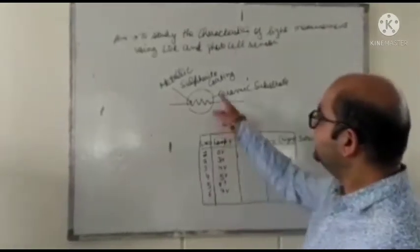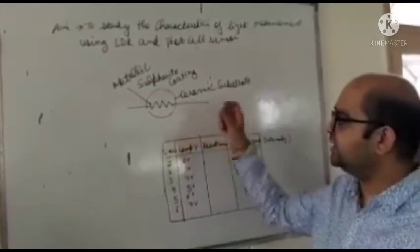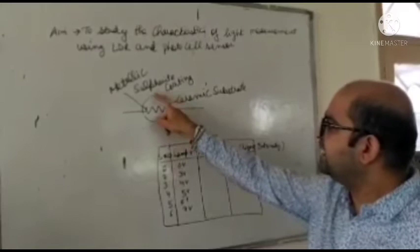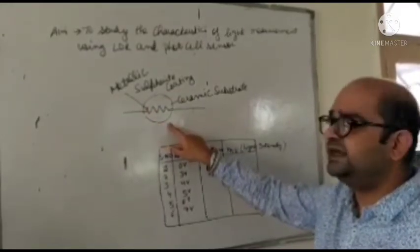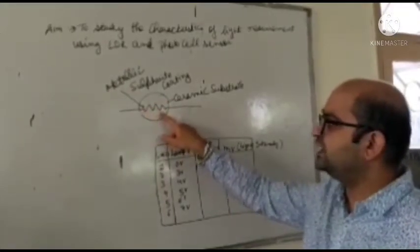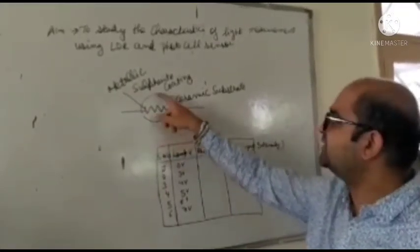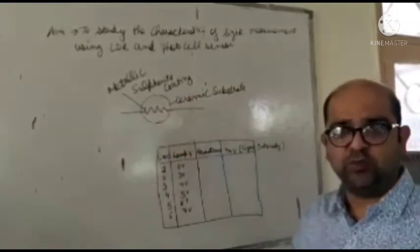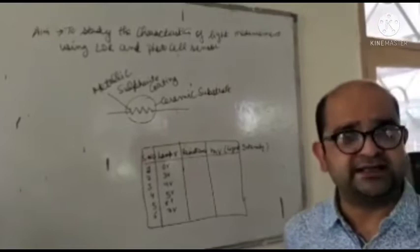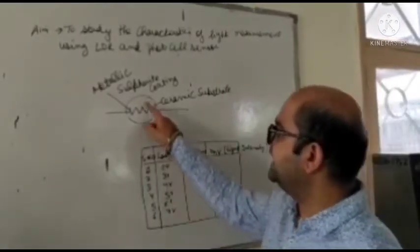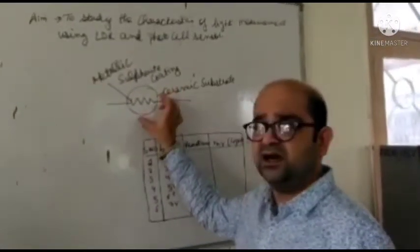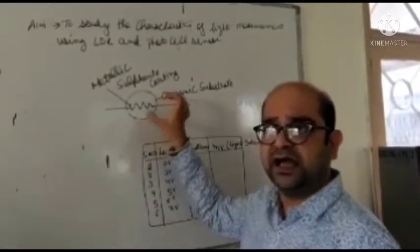This is the schematic diagram of the LDR sensor. You can see the light dependent resistor here. It is made up of a metallic sulfide coating — that is the metallic substance used for manufacturing this LDR — and we have a ceramic substrate coating on the outside in order to protect it from external environmental conditions or deterioration.